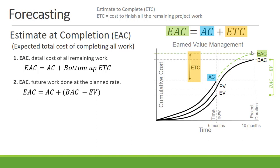Then we can calculate our Estimate at Completion if the future work is done at the planned rate of our project. That is our Actual Cost plus the Budget at Completion minus the Earned Value — the work that has been done to date. So the remaining budget is Budget at Completion minus Earned Value.